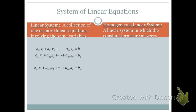When we have a system of linear equations, we call it a linear system. It is a collection of one or more linear equations involving the same variables as listed below.